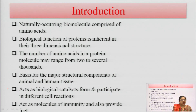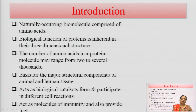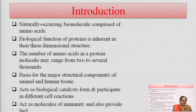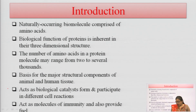The biological function of protein is inherited in the three-dimensional structure. The number of amino acids in a protein molecule may range from 2 to several thousand, depending on the particular protein. Proteins are the basis for major structural components of animal and human tissues, act as biological catalysts, participate in different cell reactions, act as molecules of immunity, and provide fuel to our body.